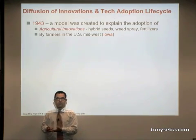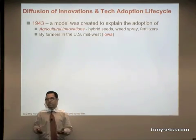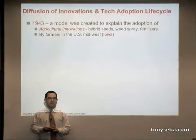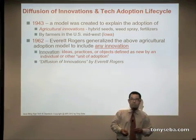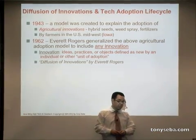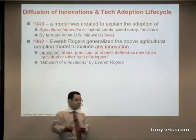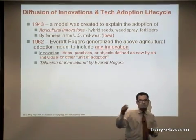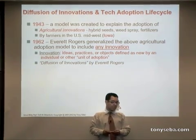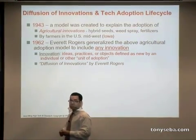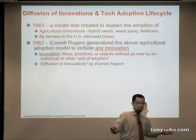What they wanted to know was: why does a farmer adopt a new technology, whether it's hybrid seeds or a new type of fertilizer? Then in the 1960s, this model was extended by Everett Rogers, who has written the definitive books on the subject, updating them every 10 years or so. They are basically the best books about the diffusion of innovation, period. It's called Diffusion of Innovations by Everett Rogers.